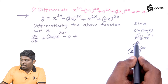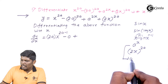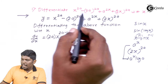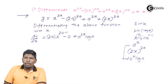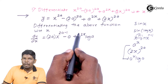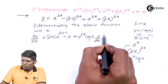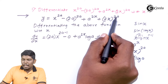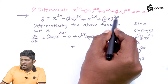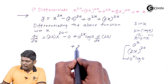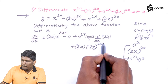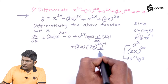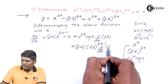The derivative of a raised to x is a raised to x times log a. So the derivative of a raised to 2x will be a raised to 2x times log a. But since this is a composite function, we also multiply by d/dx of 2x — the part replacing x. The next part is 2x raised to 2a; comparing with x raised to n, the derivative becomes 2a times (2x) raised to 2a minus 1, then multiplied by d/dx of 2x.